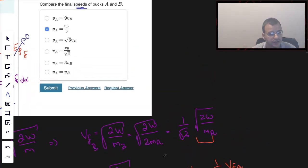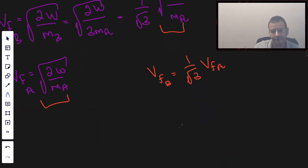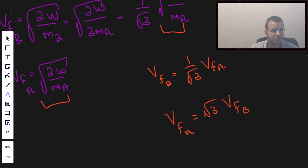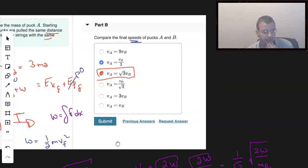So V final A equals square root of 3 times V final B. There we go, and I just rearranged that. So coming back up here, V final A is going to be square root of 3 final velocity B.